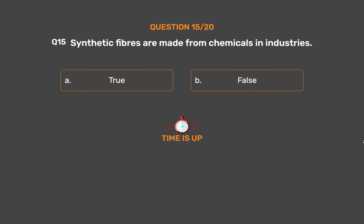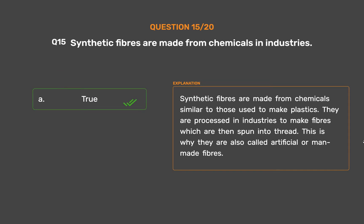The correct answer is Option A, True. Synthetic fibers are made from chemicals similar to those used to make plastics. They are processed in industries to make fibers which are then spun into thread. This is why they are also called artificial or man-made fibers.